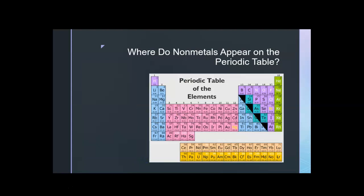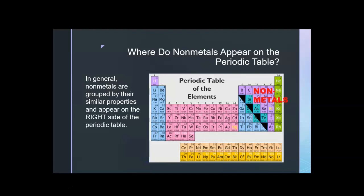Where do non-metals appear on the periodic table? Well, the metals appeared on the left. In general, non-metals are grouped by their similar properties and appear on the right side of the periodic table. So those are the non-metals over on the right.